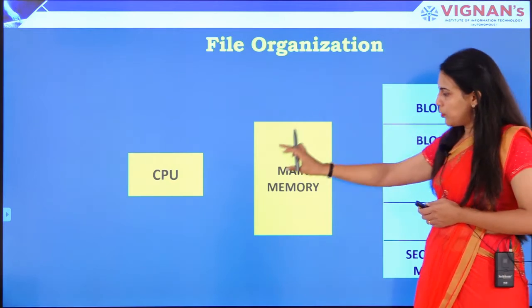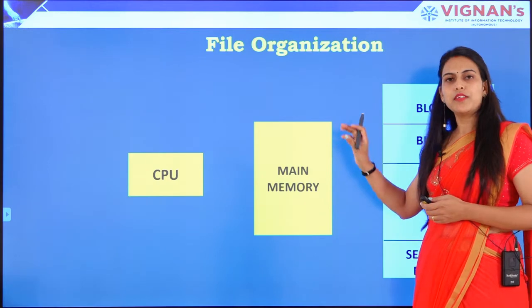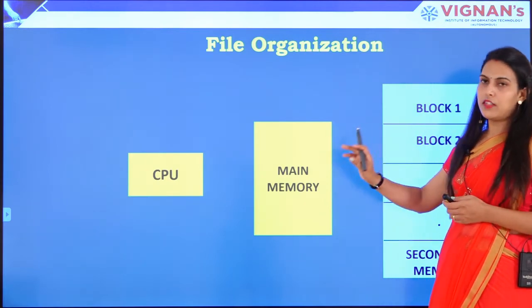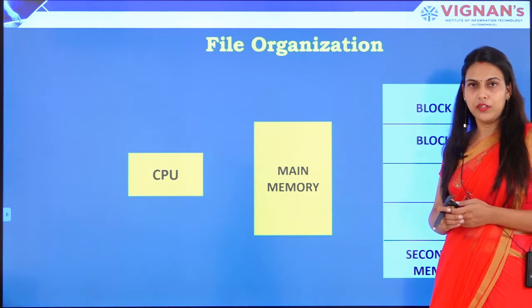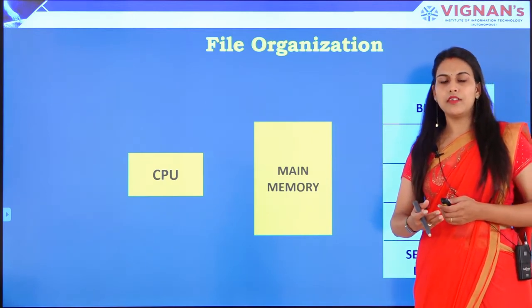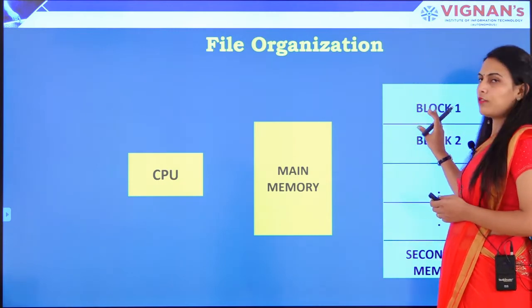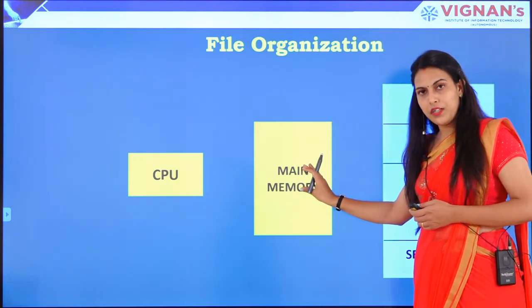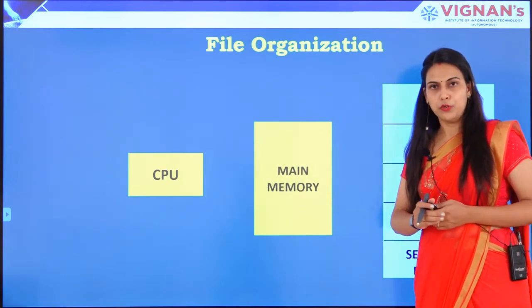Why does CPU interact with the main memory? Because the speed of CPU is compatible with the speed of main memory, but CPU and secondary memory are not speed compatible. That is the reason why whenever some data is required, first that data will be transferred from secondary memory to main memory and then that data will be accessed by the CPU.